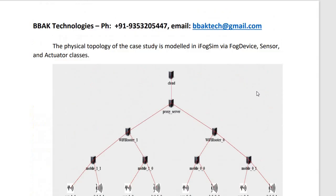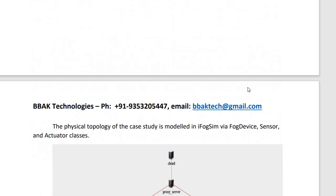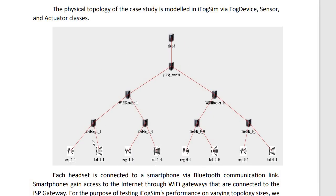As discussed in an earlier video, the EEG game application is designed with three models: the client, the concentration calculator, and the coordinator. These three models will be deployed on this hardware infrastructure. The question is which model should be placed where — one or two models can be put on the edge device, one or two on a fog resource, or something can be put on the cloud resource.